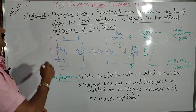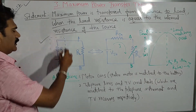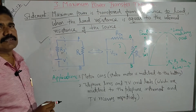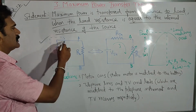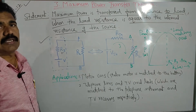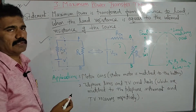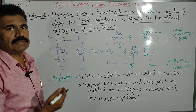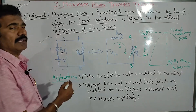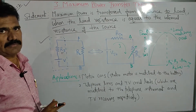Now let us try to understand with a simple circuit. We are considering a voltage source inside the dotted line, in series with an internal resistance RS. We can assume this is a power supply. Across the two terminals A and B, we connect a load resistor RL. To get the maximum power across the load, it can be obtained only when the load resistor RL is equal to the internal resistance RS.